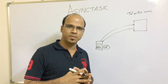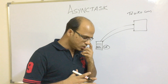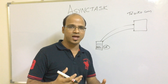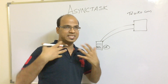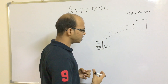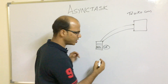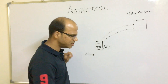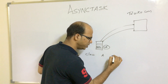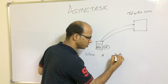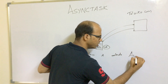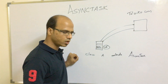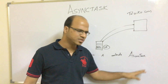Now, how to implement this? You have to create a class inside your app — specifically an inner class that will provide you the AsyncTask feature. Let's say in my app I create a class called A. We have to extend that class with AsyncTask. So we have: class A extends AsyncTask.